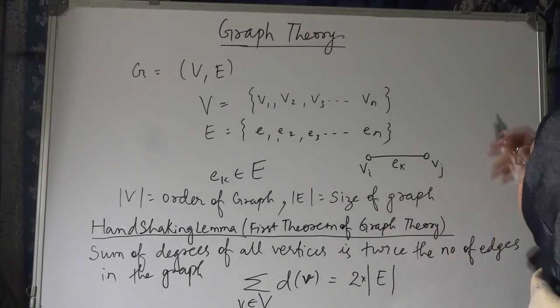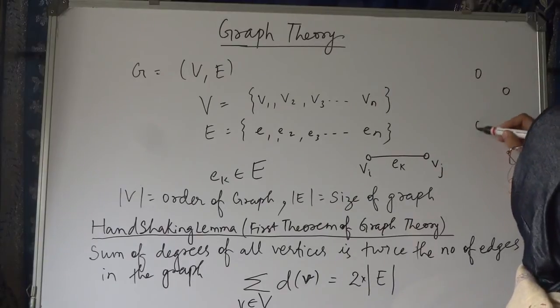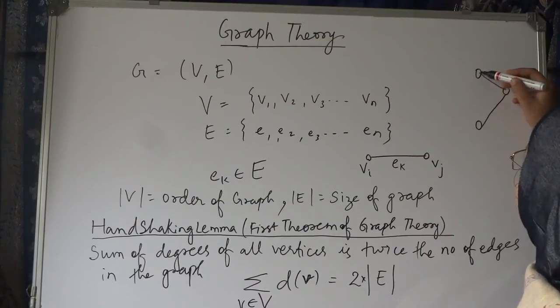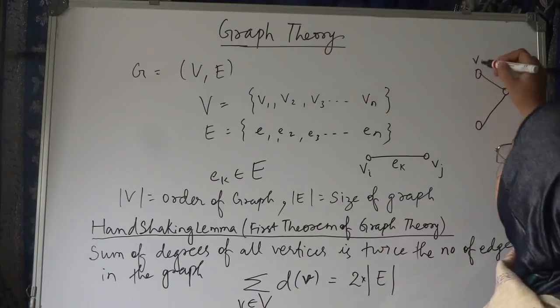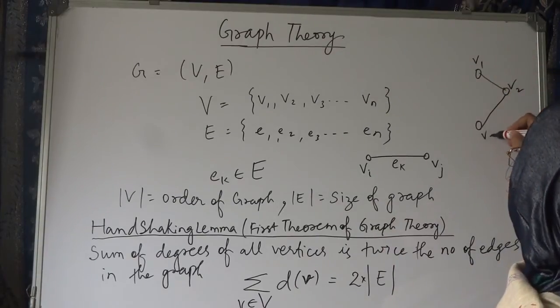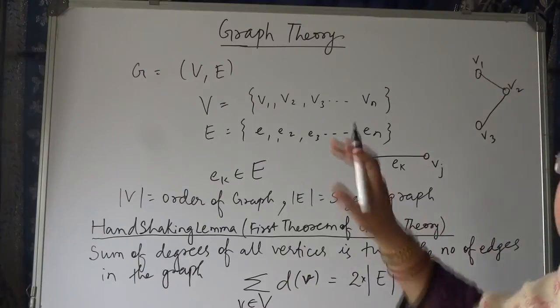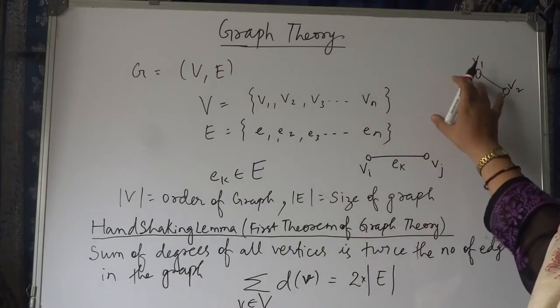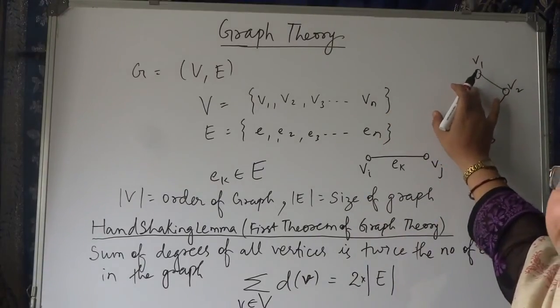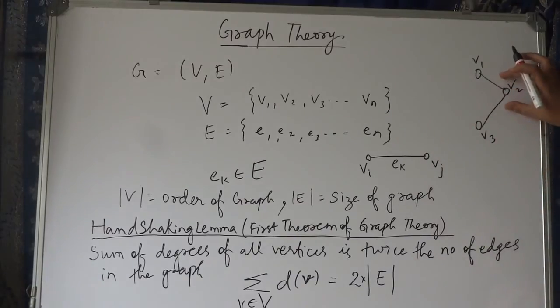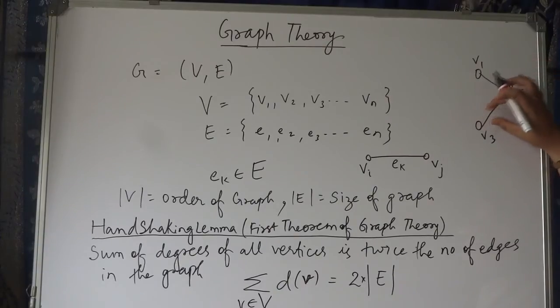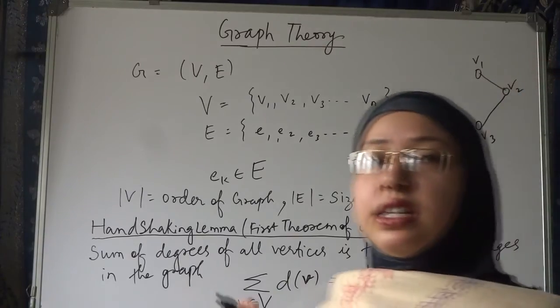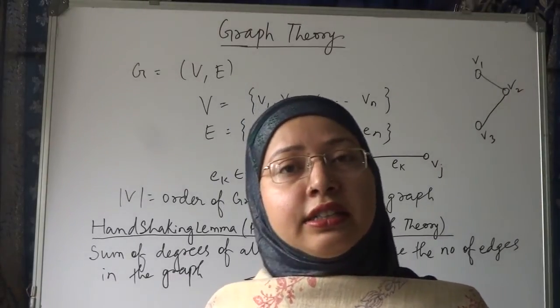Take an example. Suppose this is a graph and how we find the degree of any node. Suppose this is one node v1, this is v2, this is v3. The degree of v1 will be 1 because it has only one edge moving from this node. V2 has two edges incident on v2, so degree of v2 will be 2. Degree of v3 will be 1 because there is only one edge incident on v3. Degree you understand?